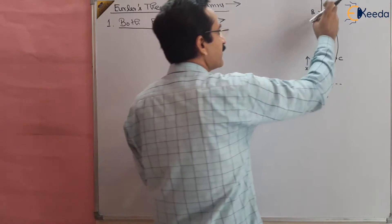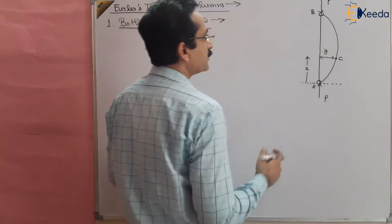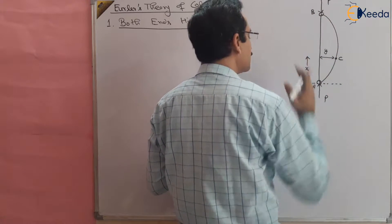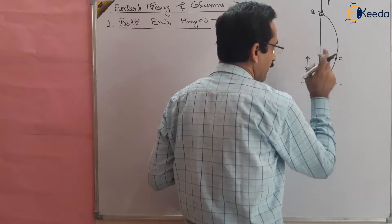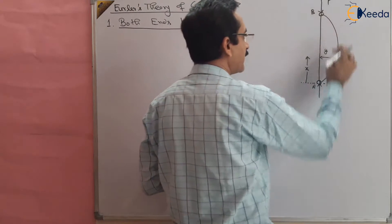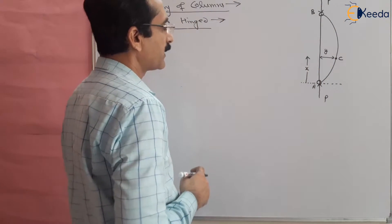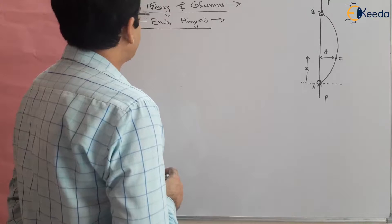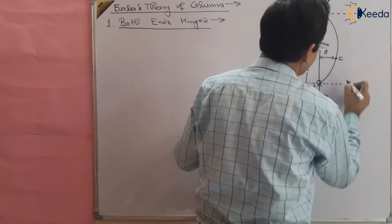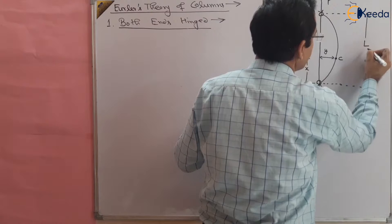You know that this is a concave structure — concave towards the initial axis. So the bending is concave towards the axis, which means it is a negative bending moment. Check the sign convention: this is a negative bending moment. The length of the column is capital L.